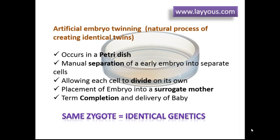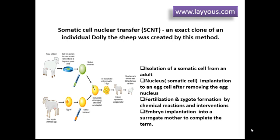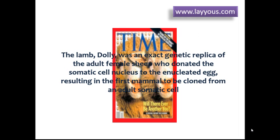Somatic Cell Nuclear Transfer (SCNT) uses a different approach than artificial embryo twinning, with the same result: an exact clone of an individual. Dolly the sheep was created by this method. To make Dolly, researchers isolated a somatic cell from an adult female sheep. Then the nucleus is transferred from that cell to an egg cell after removing the egg's nucleus. Following chemical reactions and interventions, the egg cell with the new nucleus behaves like a freshly fertilized zygote. An embryo then develops, is implanted into a surrogate mother, and carried to term. The lamb, Dolly, was an exact genetic replica of the adult female sheep who donated the somatic cell nucleus to the enucleated egg, resulting in the first mammal cloned from an adult's somatic cell.